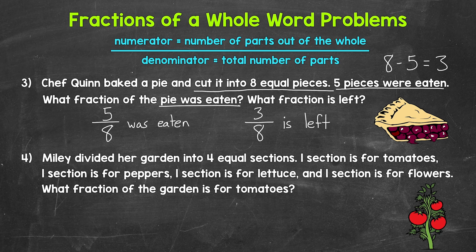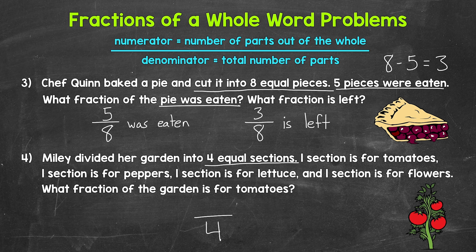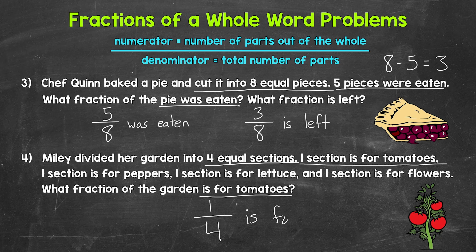Lastly in this section, let's move on to number four, where Miley divided her garden into four equal sections. One section is for tomatoes, one for peppers, one for lettuce, and one for flowers. What fraction of the garden is for tomatoes? The denominator is the total number of sections the garden was divided into — four equal sections, so our denominator is four. The numerator is one, since tomatoes go in one section. Our fraction is one fourth. One fourth of the garden is for tomatoes.